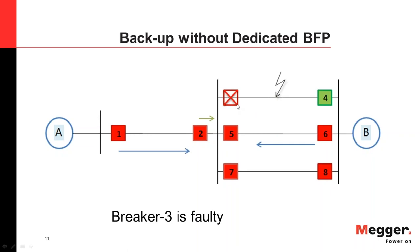Let's take an IEEE standard example — a two-source model with Sources A and B and a number of breakers, each assigned a number. Assume we have a fault between Breaker 3 and Breaker 4. With proper functioning of both breakers, Breaker 3 and Breaker 4 will open, there is no in-feed from the sources to the fault, and the fault is cleared.